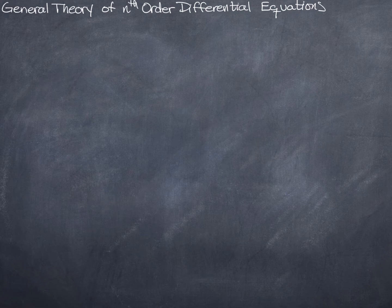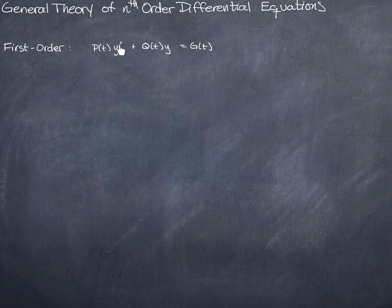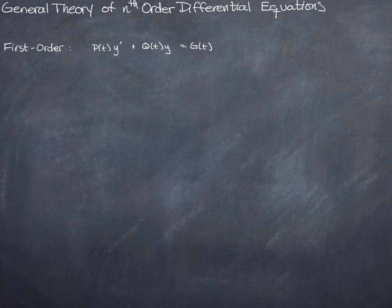Now we know what first and second order differential equations look like. Here's a first order: there's a y prime, and that's the highest derivative, so that's what makes it a first order — the first derivative. There's a function of t in front of y prime, a different function of t in front of y, and then there's a function of t on the right-hand side.